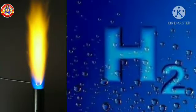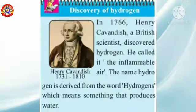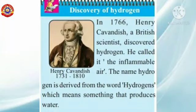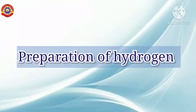Now let us know about the discovery of hydrogen. Hydrogen was first artificially produced in the early 16th century by the reaction of acids on metals. In 1766, Henry Cavendish discovered the gas hydrogen. He called it the 'inflammable air.' The name hydrogen is derived from the word 'hydrogens,' which means something that produces water. Now shall we see the preparation of hydrogen?